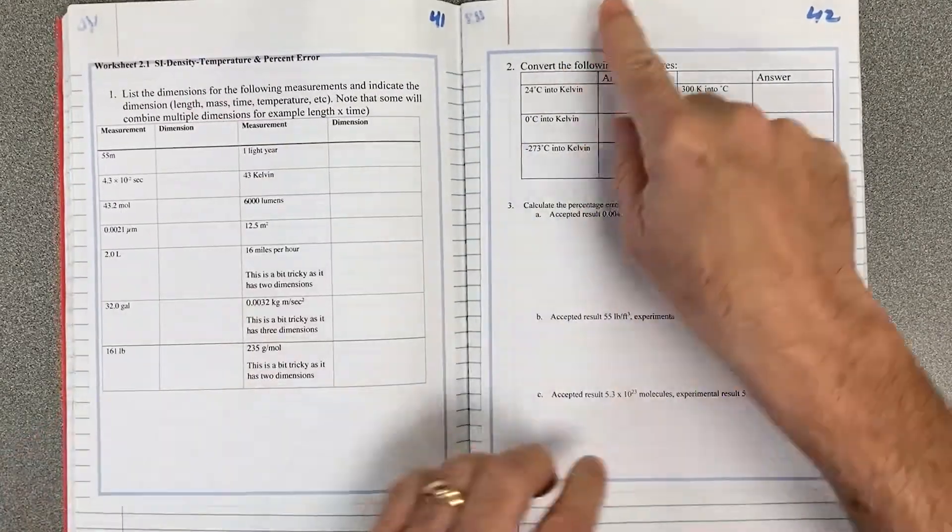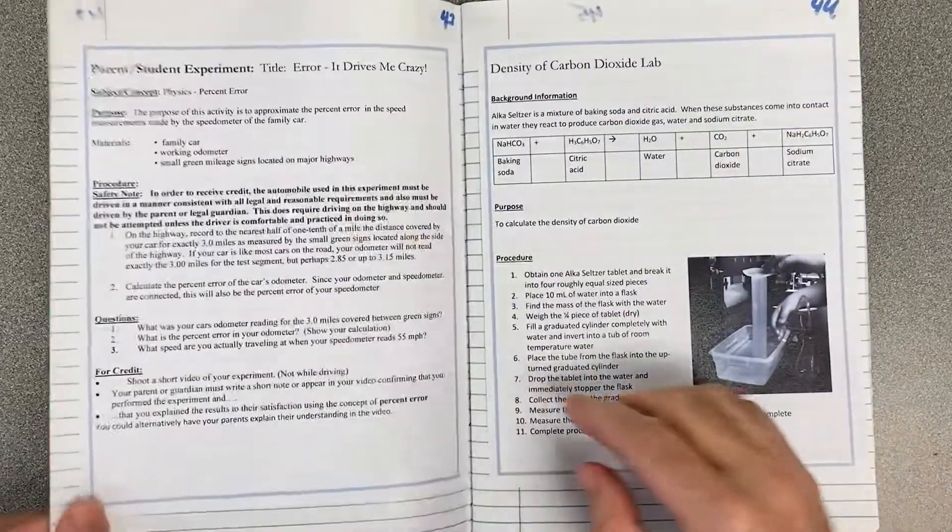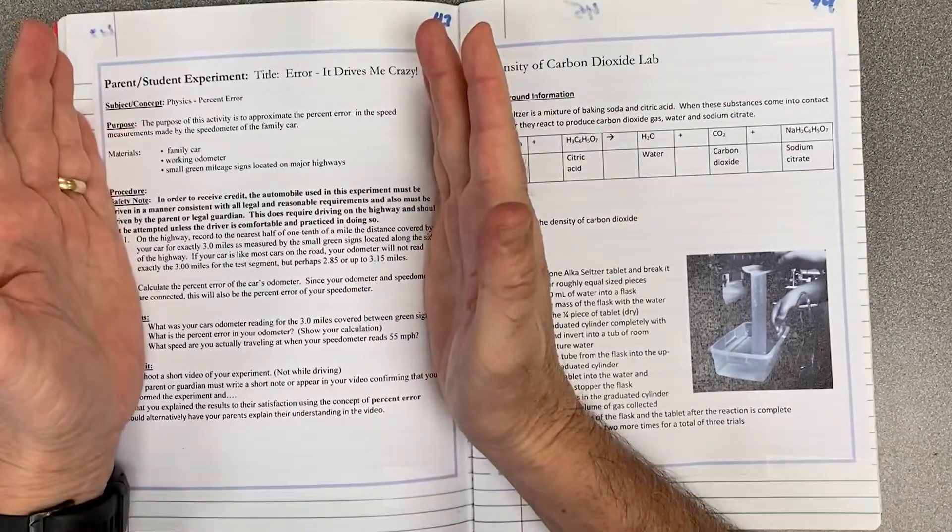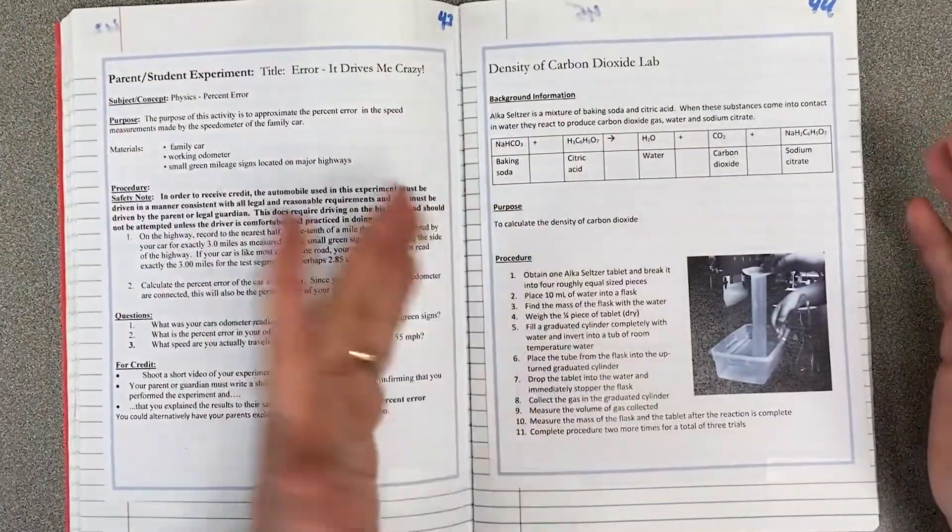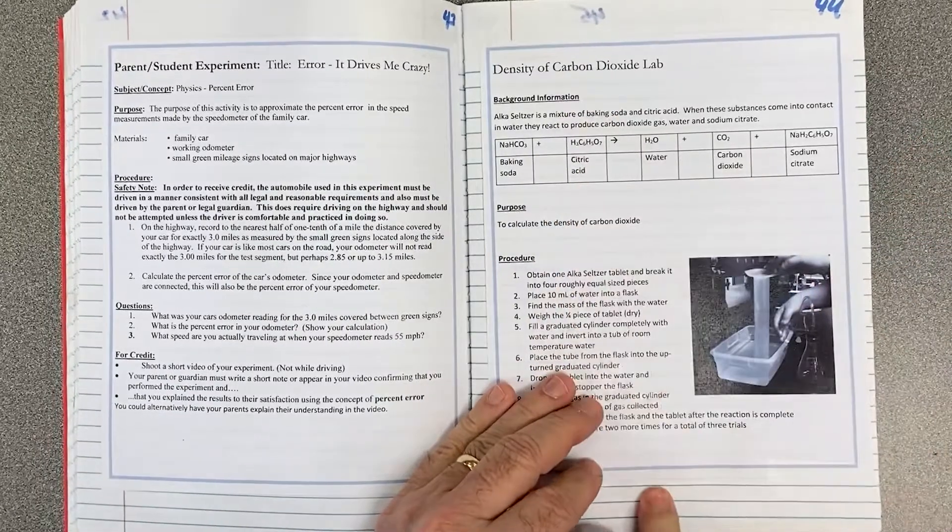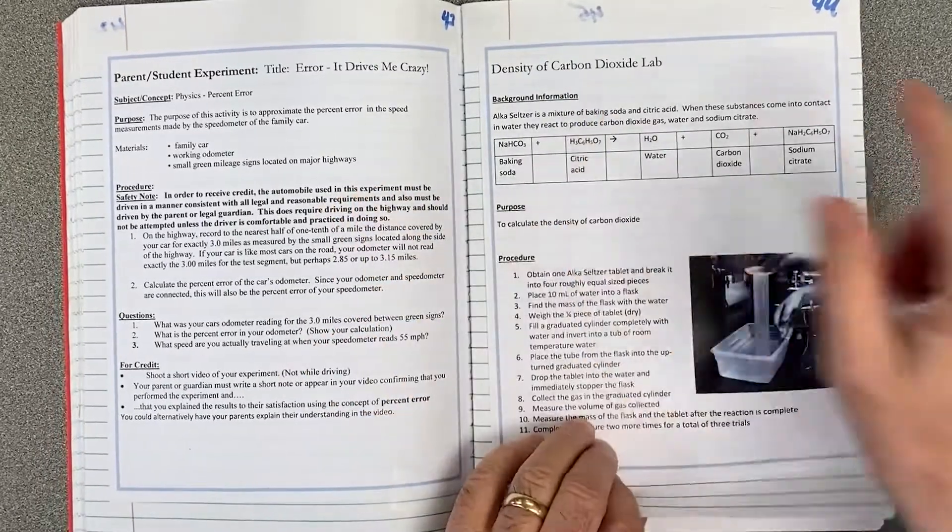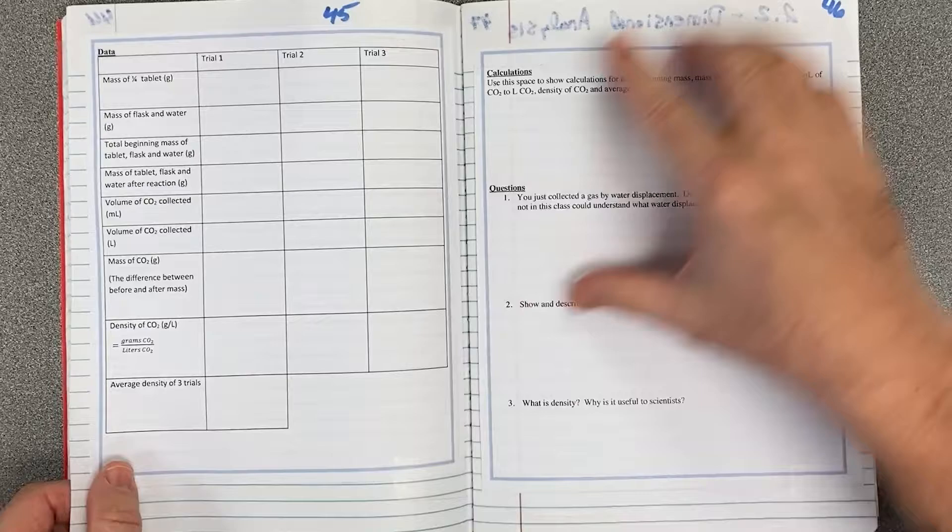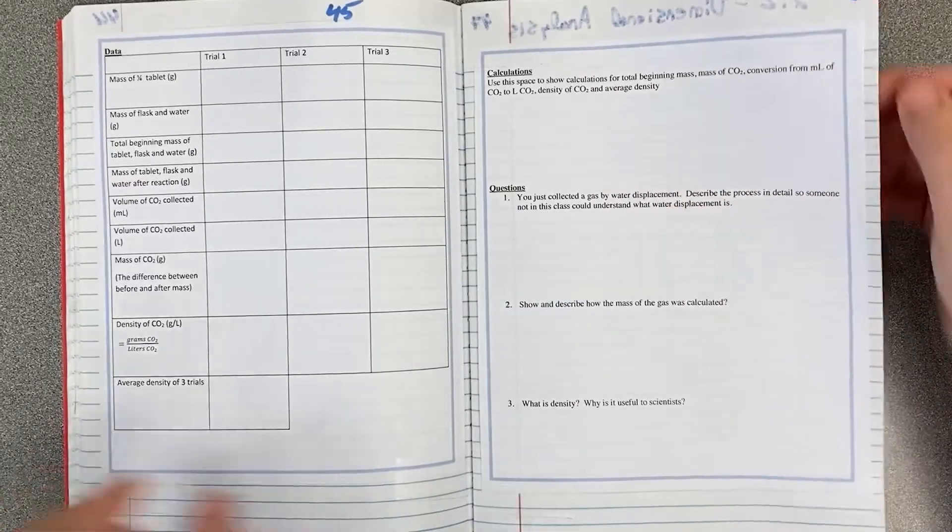And this is the 2.1 worksheet. You've got two pages of that. Then we're going to do a parent-student experiment. We'll talk about that in class. The density of carbon dioxide, so two experiments. Density of carbon dioxide lab looks like it's three pages long. It goes up to page 46.